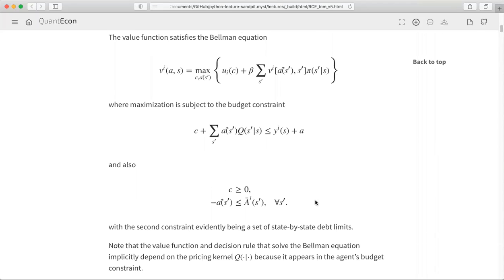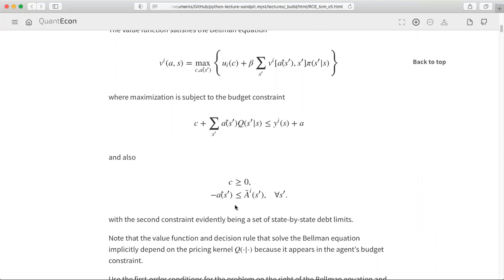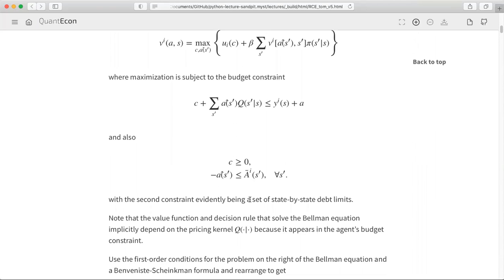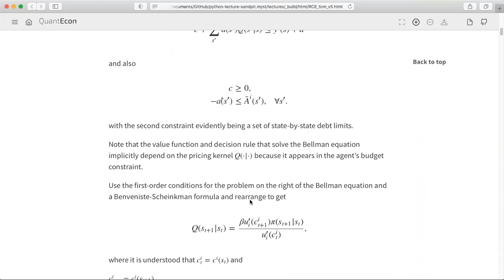There's our budget constraints, non-negativity constraint on consumption, and here are my restrictions on debt limits.